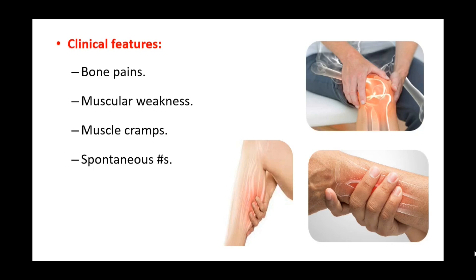Clinical features of osteomalacia include diffuse bone pain ranging from backache to generalized pain, bone tenderness, and muscular weakness. The patient may find it difficult to climb stairs, and a waddling gait may be noticed due to weakness or pain. Patients may also experience muscle spasms, twitching, and muscular cramps. Spontaneous fractures, usually in the spine, can also occur.